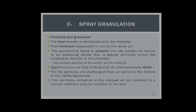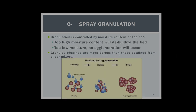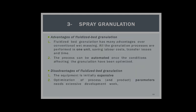Spray granulation uses a fluidized bed granulator. The feed powder is introduced into a chamber, then fluidized and suspended in air by warm air. The granulating liquid is sprayed over the powder to collect particles together; agglomerates are formed and simultaneously dried. The dry granules are discharged from an outlet at the bottom. Spray granulation is controlled by moisture content — too high moisture will defluidize the bed; too low moisture means no agglomeration and no granules will be formed.